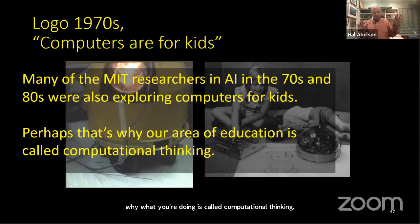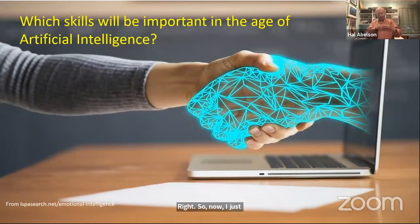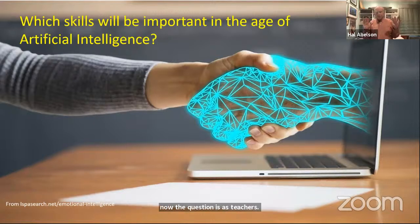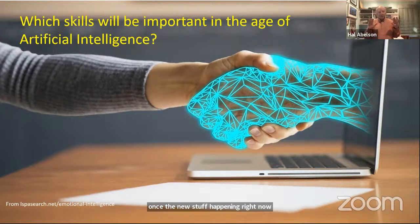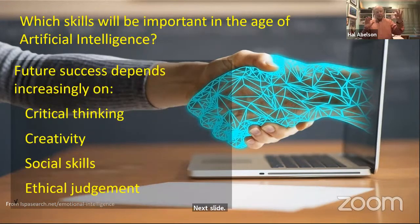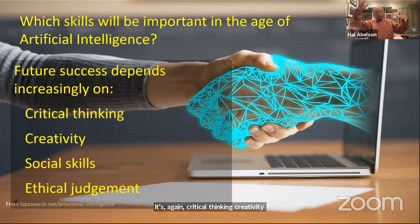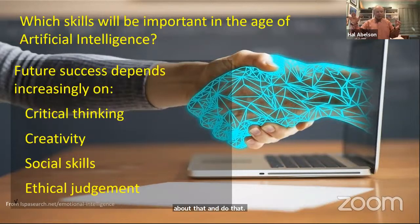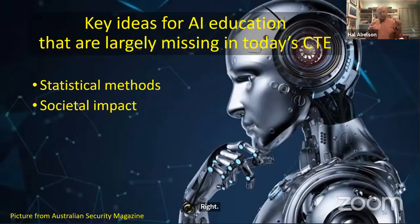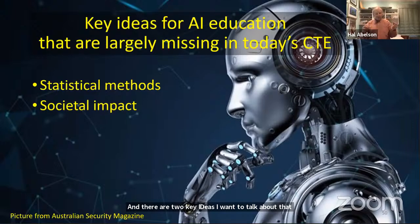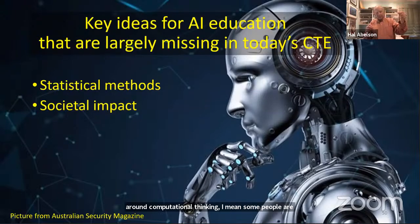Now we're entering the age of artificial intelligence. As teachers, what's important? What have we been doing that maybe isn't so important, and what's new? Critical thinking, creativity, social skills, and ethical judgment are going to be future success factors — certainly we want our students to learn those. There are two key ideas that are largely missing from instruction around computational thinking that, when you have lists of what should be covered, tend not to be there.